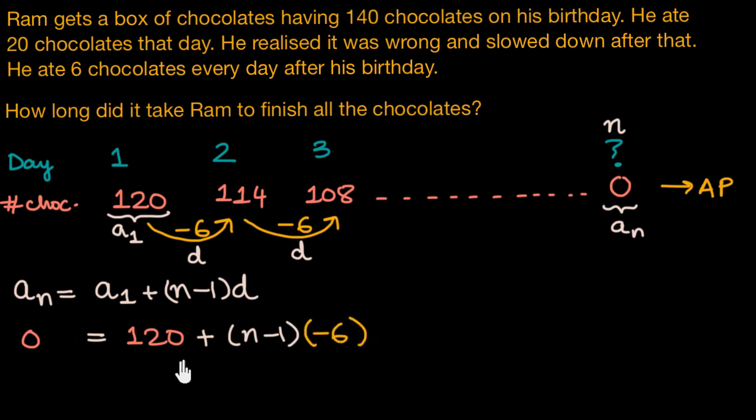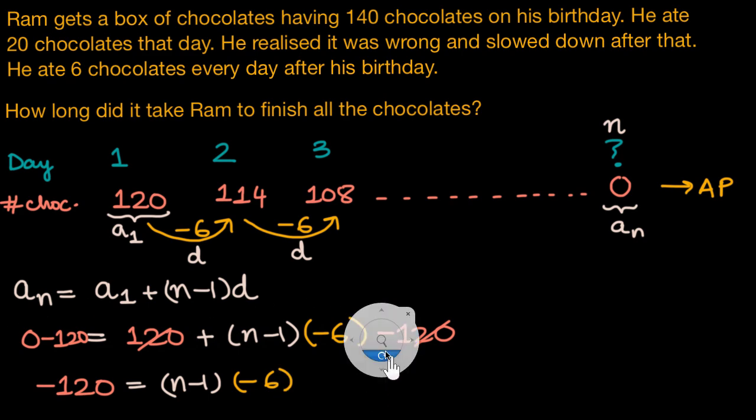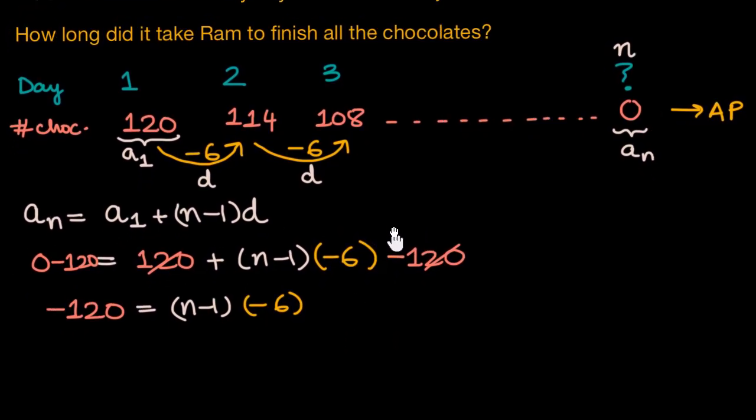So let's simplify this equation and find out n. And for doing that, the first thing I'll do is subtract 120 from both sides. So over here, these two get canceled and I have negative 120 equal to n minus one times negative six.